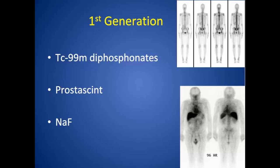ProstaScint has really fallen out of favor in the past few years. One big problem is that it binds to an internal epitope of PSMA, which often detects chronic disease and has decreased sensitivity. The performance of the exam is more difficult and occurs over multiple days. The NCCN guidelines have dropped it from their recommendations as well.